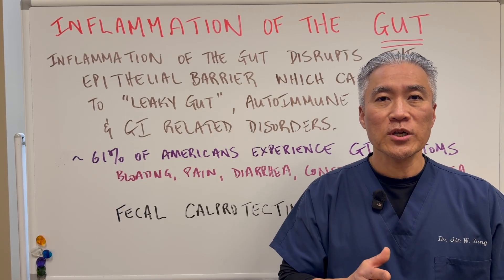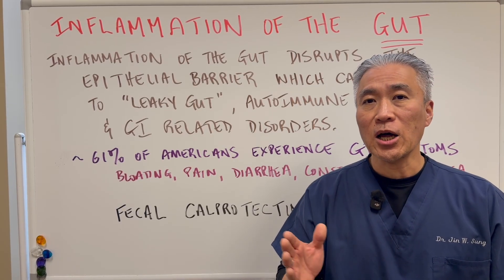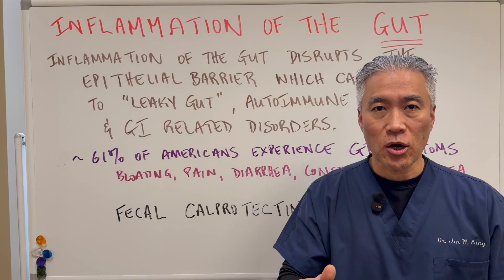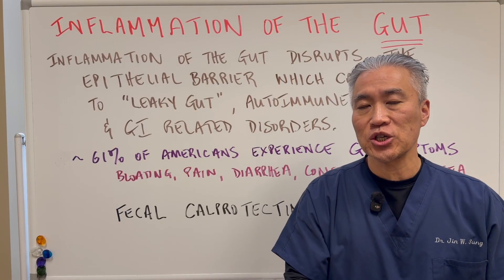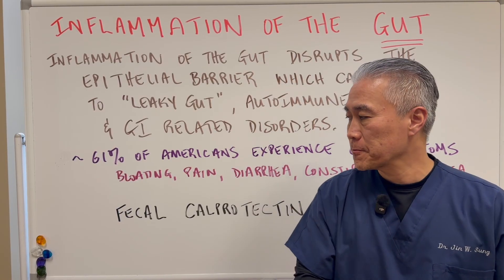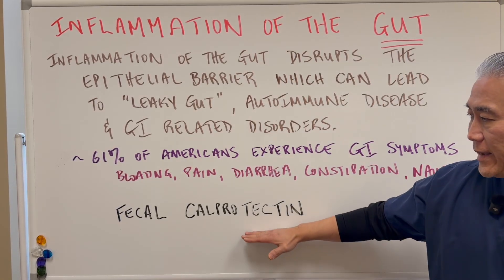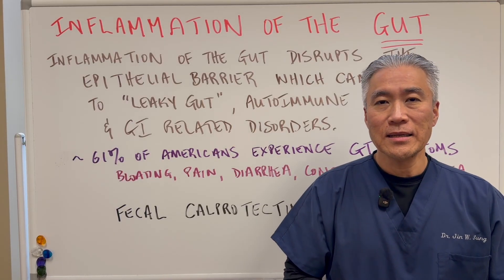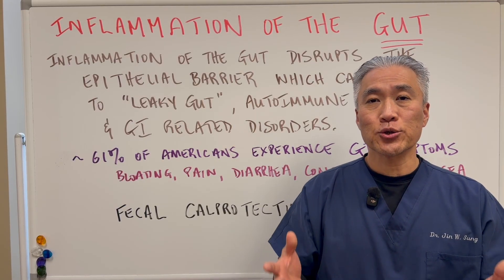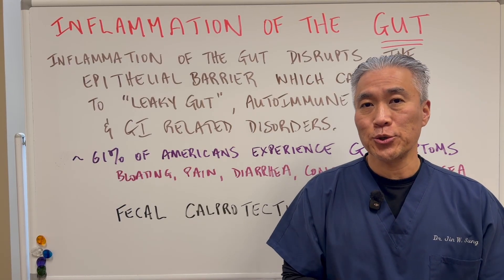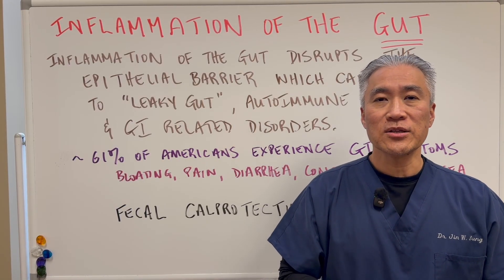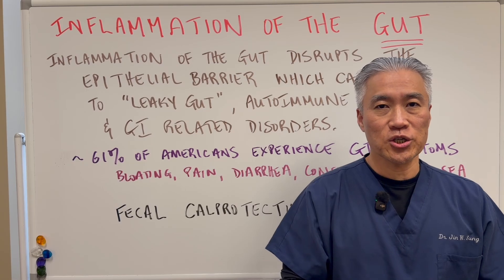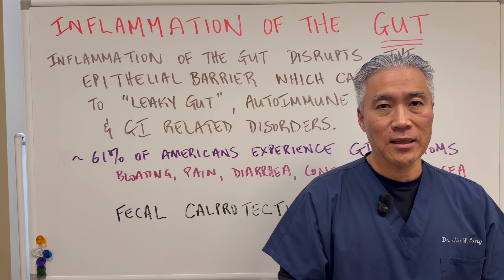The main question is: how do we know if it's causing inflammation in our gut? The answer is fecal calprotectin. This is a stool test that you can do to determine whether you have inflammation in the gut lining.